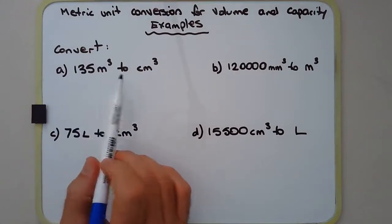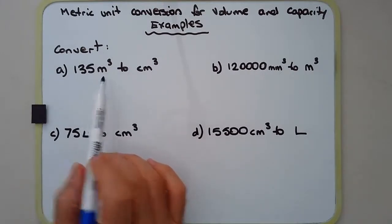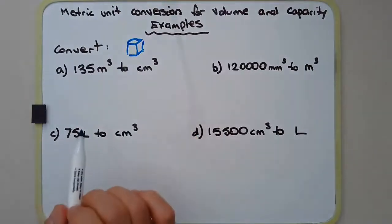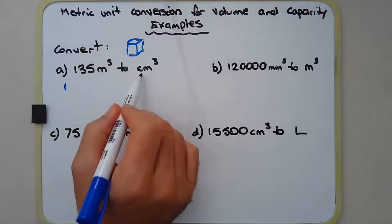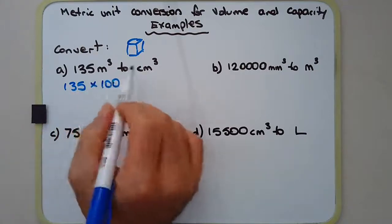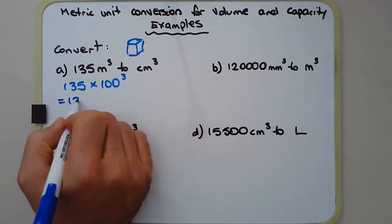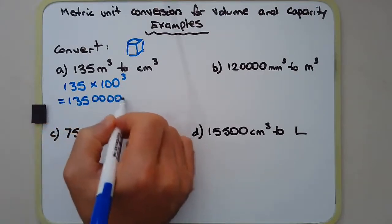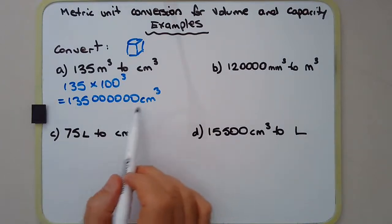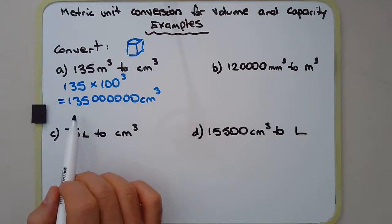Example A: Convert 135 cubic meters to cubic centimeters. We're going from a large unit to a smaller unit. There are 100 centimeters in a meter, so because we're dealing with volume we multiply by 100³, which is six zeros. That gives 135,000,000 cubic centimeters. Incidentally, that's also 135,000,000 milliliters, which we could further convert to liters or kiloliters.